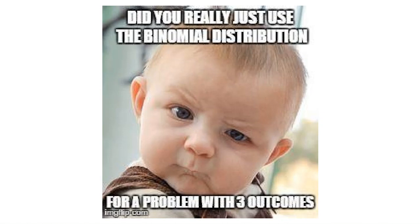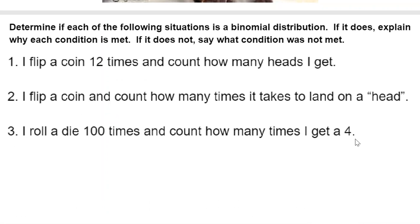We are ready for worksheet 8c in the Math 4 course. Our initial definition of binomial is that there are two outcomes — either success or failure, true or false, that sort of thing. We have to figure out whether these problems fit as a binomial distribution or not. If it does, explain why each condition is met; if it does not, say what condition was not met.